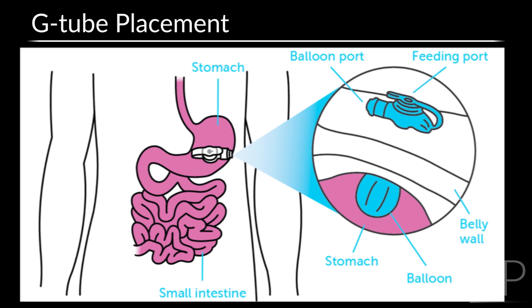The G-tube is stabilized within the stomach via a water-filled balloon, and the external base rests on the surface of the skin over the stomach.